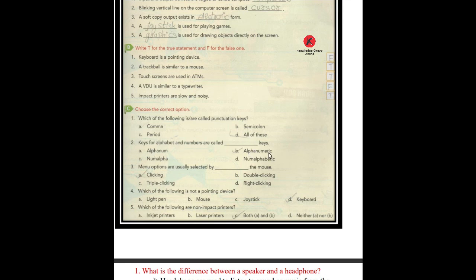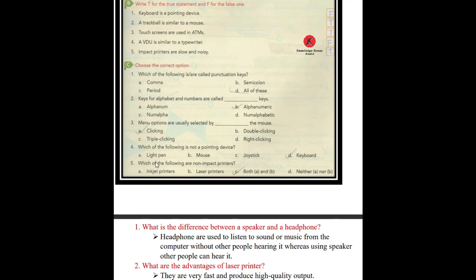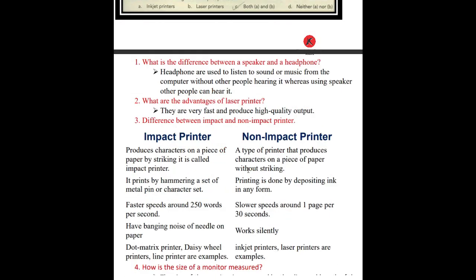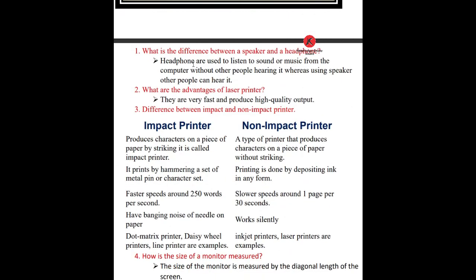Multiple choice answers: Keys for alphabets and numbers are called alphanumeric keys. Menu options are usually selected by clicking the mouse. The device that is not a pointing device is the keyboard. Both inkjet and laser printers are non-impact printers.